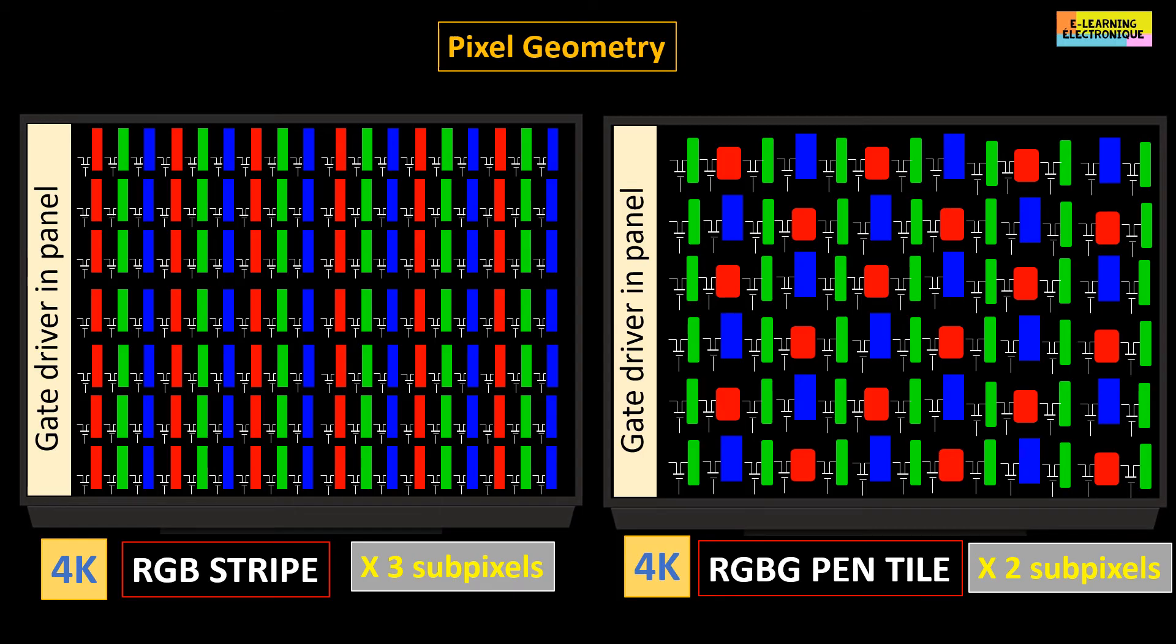Another criticism of the pentile technology is that if you look closely at the screen you can see a crosshatch aspect of the screen due to the particular arrangement of sub-pixels. It is necessary to have a pixel density exceeding 400 pixels per inch so that the human eye does not perceive this anomaly.